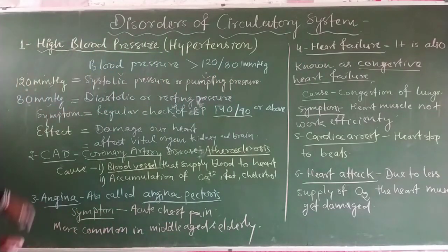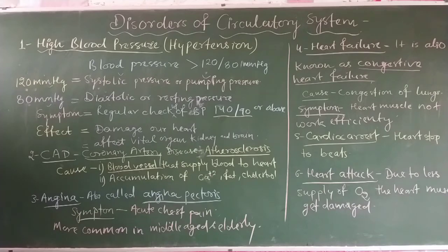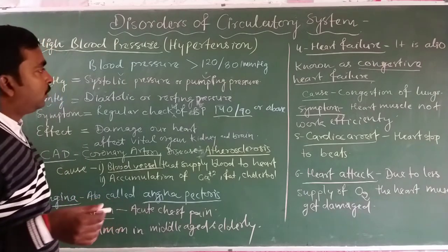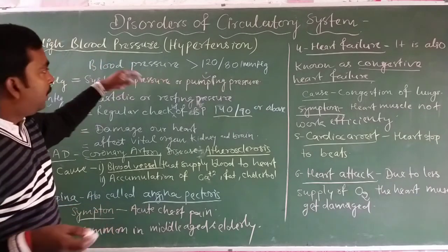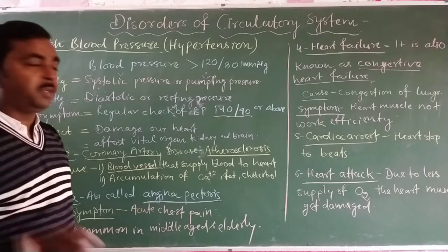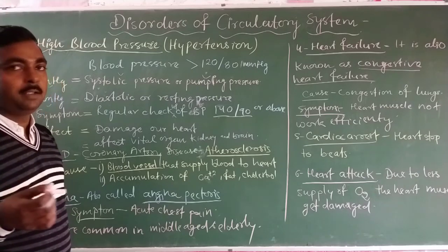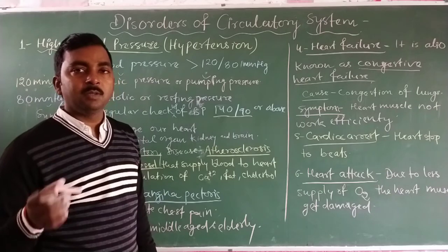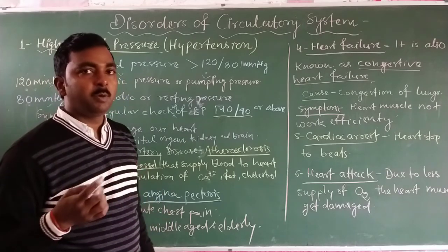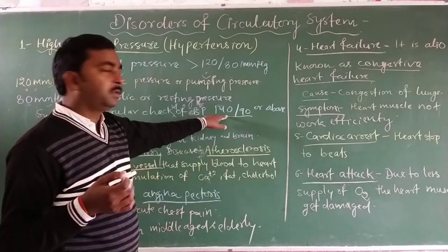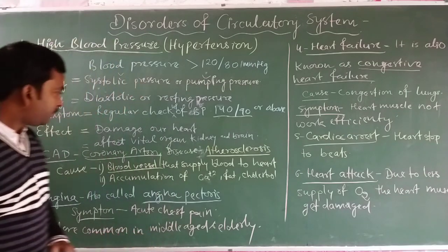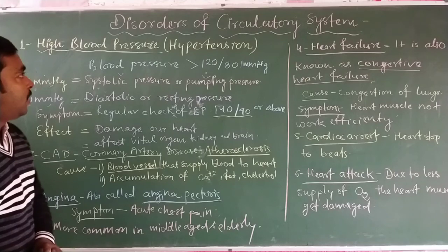These are the disorders related to blood vessels and the heart responsible for circulation in the body. Hypertension is the case of high blood pressure. The instrument used to measure blood pressure is known as a sphygmomanometer. Using this instrument, if the regular check-up reading is found to be 140/90 or above, that condition is called hypertension. These are all the disorders of the circulatory system.